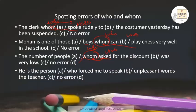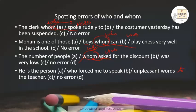'He is the person who forced me to speak unpleasant words.' Here, 'person' is the noun and 'forced' is the verb. Since a verb is followed by the relative pronoun 'who,' this sentence is correct. There is no error in this sentence — it is absolutely correct.